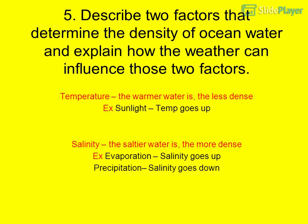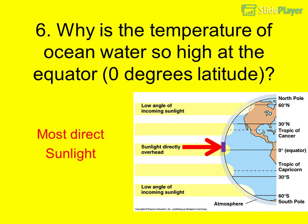Evaporation causes salinity to go up; precipitation causes salinity to go down. Question 6: Why is the temperature of ocean water so high at the equator? At 0 degrees latitude, sunlight is most direct.